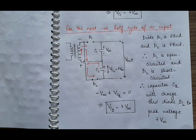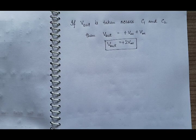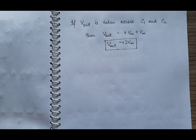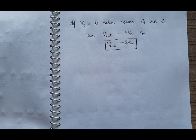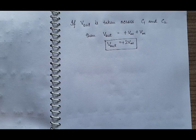Now connect load resistor RL of very high resistance and take the output across both capacitors C1 and C2. Voltage across C1 is Vm and voltage across C2 is Vm, so the output is Vm plus Vm equals 2Vm. The voltage is doubled — twice the peak of the secondary coil voltage. In this way we have discussed half-wave voltage doubler and full-wave voltage doubler. In the next lecture, we will discuss voltage tripler and voltage quadrupler, where V0 equals plus 3Vm and V0 equals plus 4Vm.